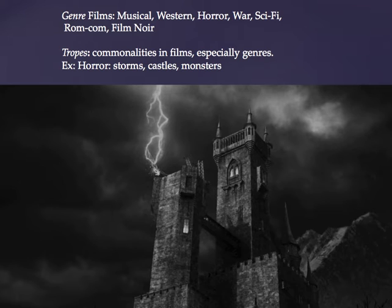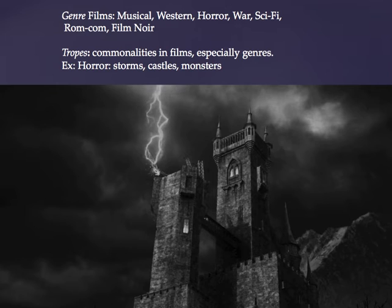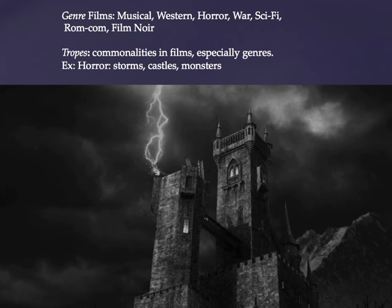I picked horror as an easy example of tropes. When we go through the three stages of the genre film, we'll come back to horror — storms, castles, thunder, lightning, fog, wind, dramatic weather, old castles like Castle Dracula, monsters, and mad scientists creating life in a lab, doing things that man — or woman — should not do. Those are tropes. Today we start with our first genre: film noir.